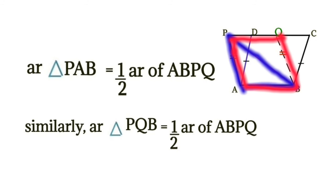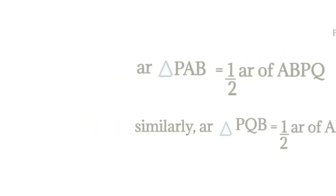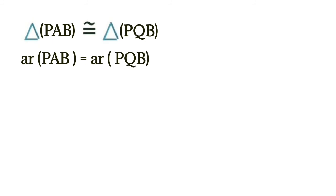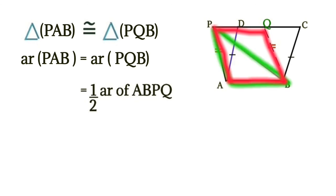Now see the other triangle: area of triangle PQB is also equal to half of the area of parallelogram ABPQ. We know the two triangles are congruent, and if two triangles are congruent their areas are equal. So triangle PAB is congruent to triangle BQP, and area of PAB equals area of triangle BQP. In place of area of triangle BQP, we can write half of area of ABPQ by substitution.